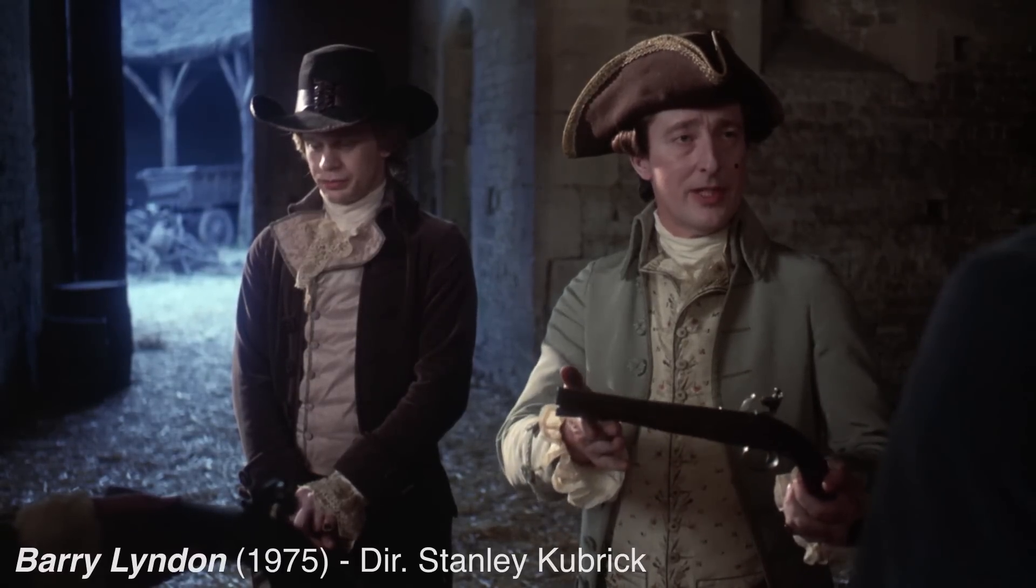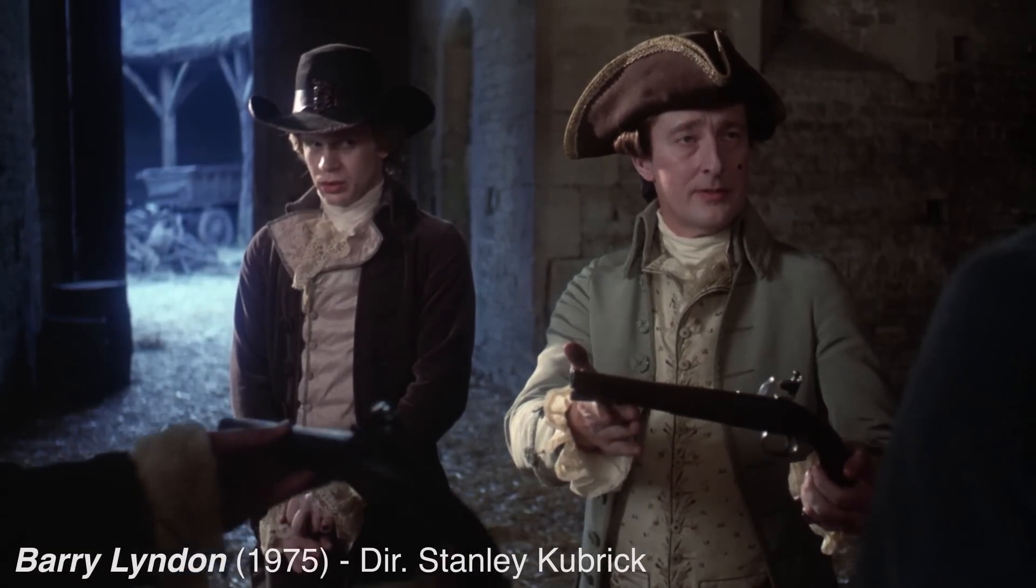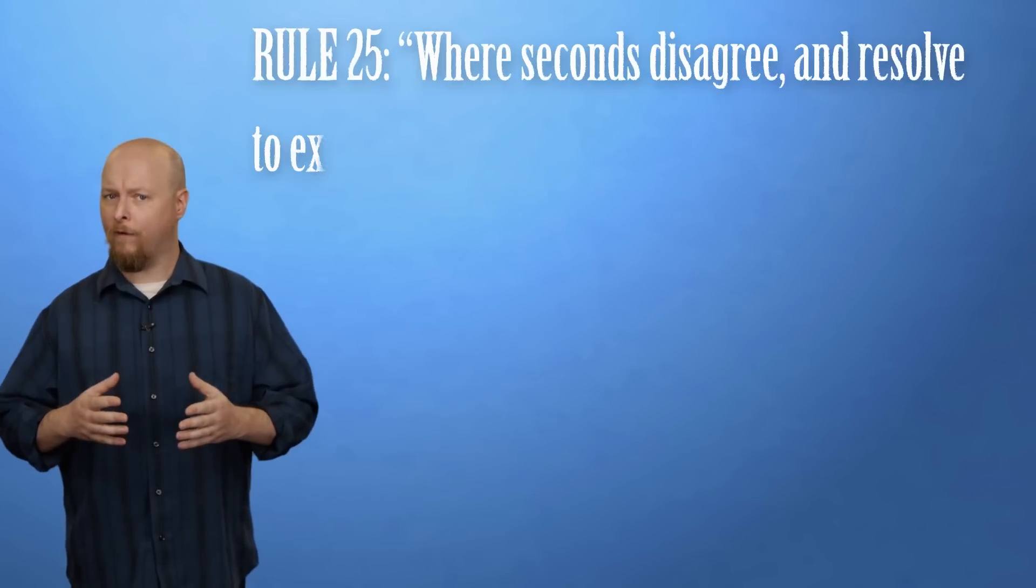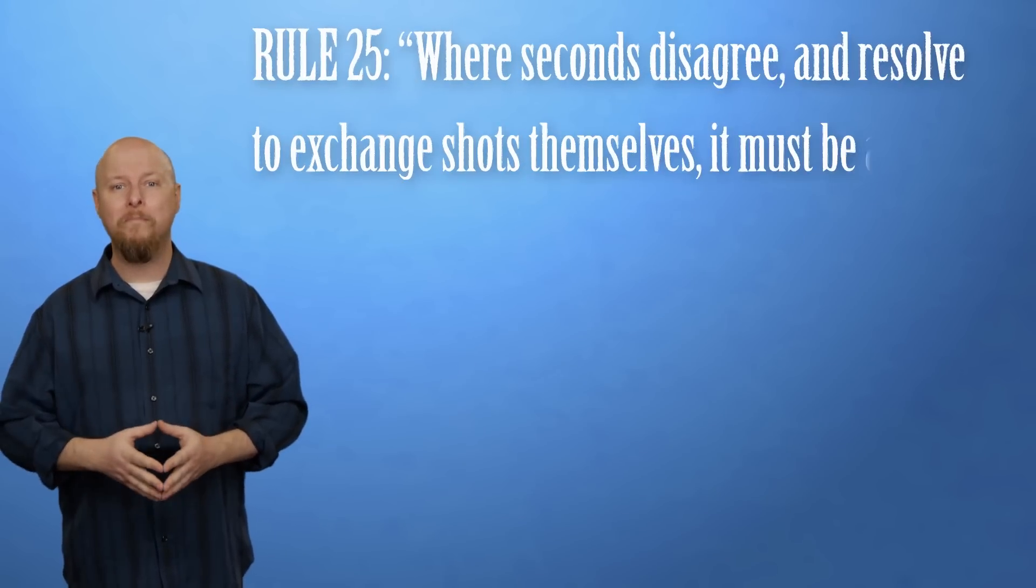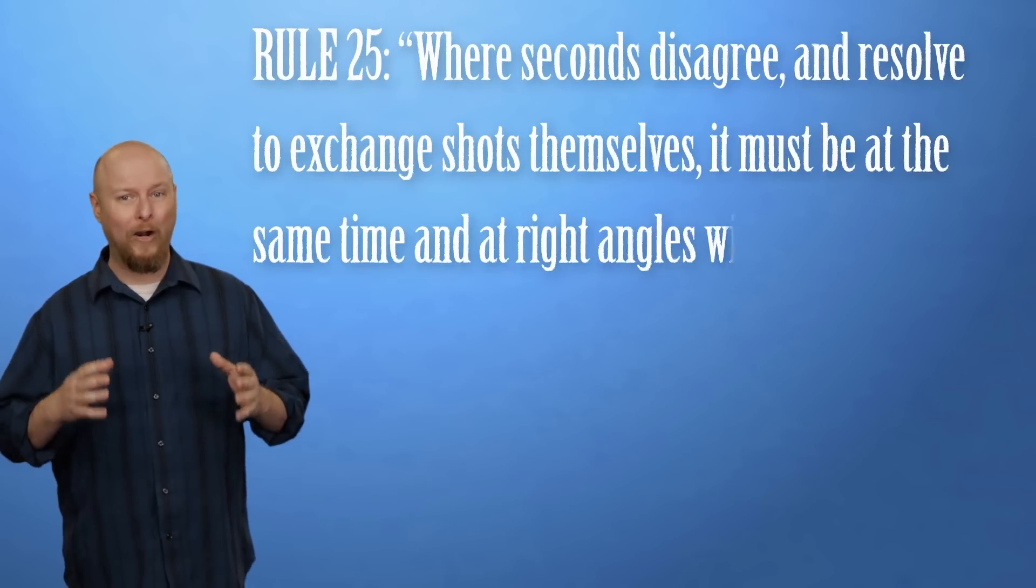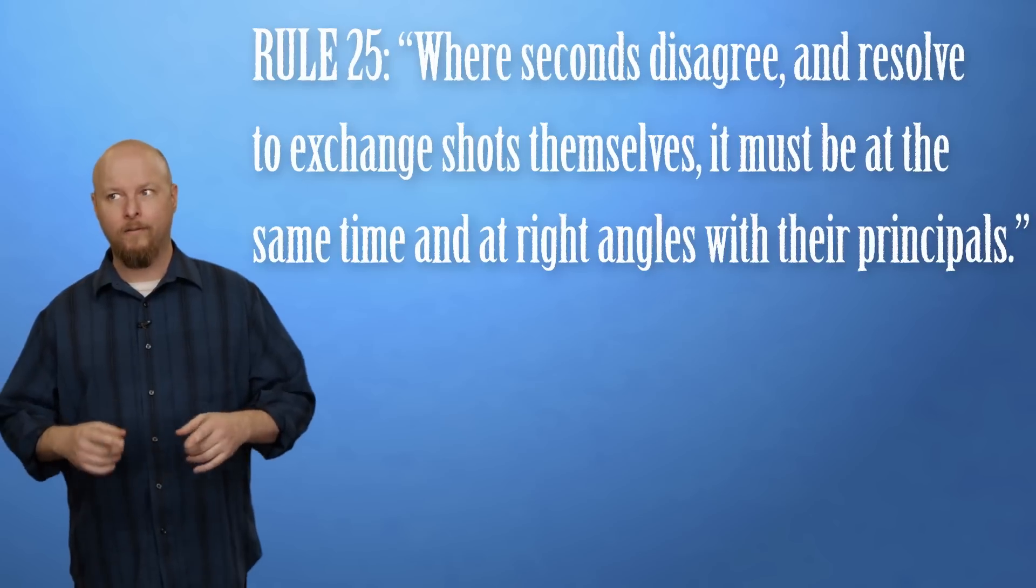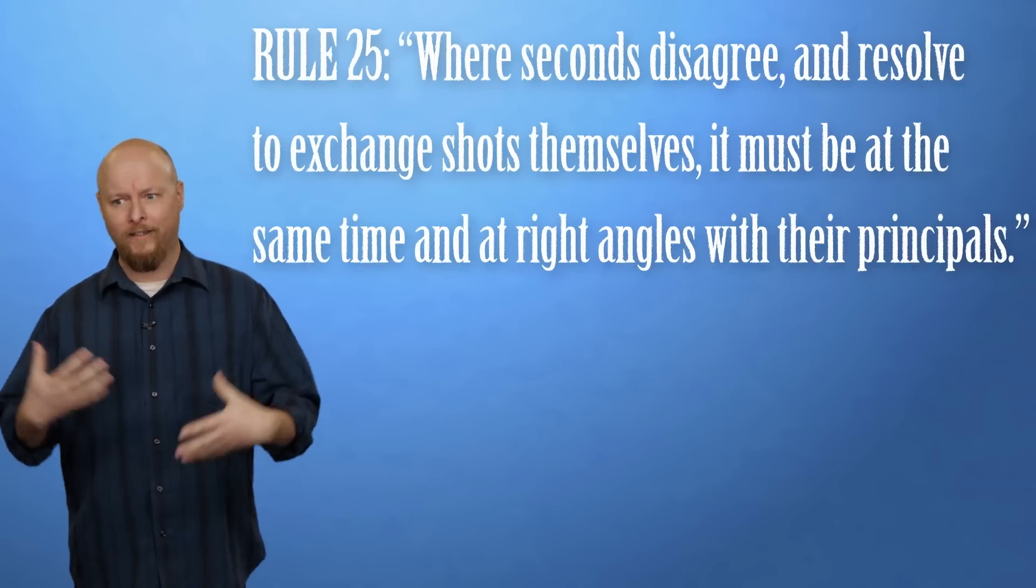You'd think from this arrangement that the seconds would tend to keep cool heads. But according to Rule 25 of the Code Duello, where seconds disagree and resolve to exchange shots themselves, it must be at the same time and at right angles with their principles - principles meaning duelists, not their own personal philosophies. And honestly, it ends up with a whole lot of people shooting at each other.